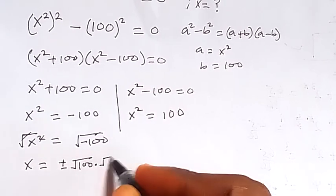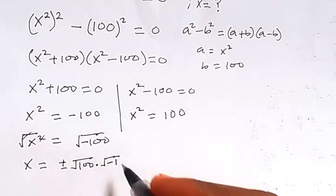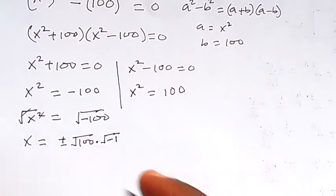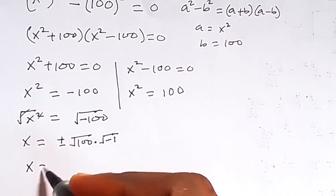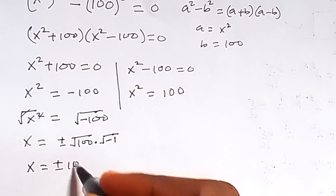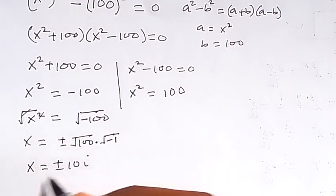Multiply by square root of negative 1. Square root of 100 is 10, square root of negative 1 is i, so x equals plus or minus 10i, and this is a complex number.